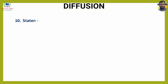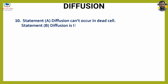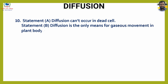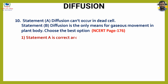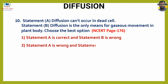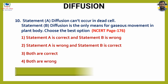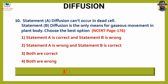Question number ten: Statement A — diffusion can't occur in a dead cell. Statement B — diffusion is the only means for gaseous movement in the plant body. Choose the best option. Options: one, statement A is correct and statement B is wrong; two, statement A is wrong and statement B is correct; three, both are correct; four, both are wrong. The answer is option three, both are correct.